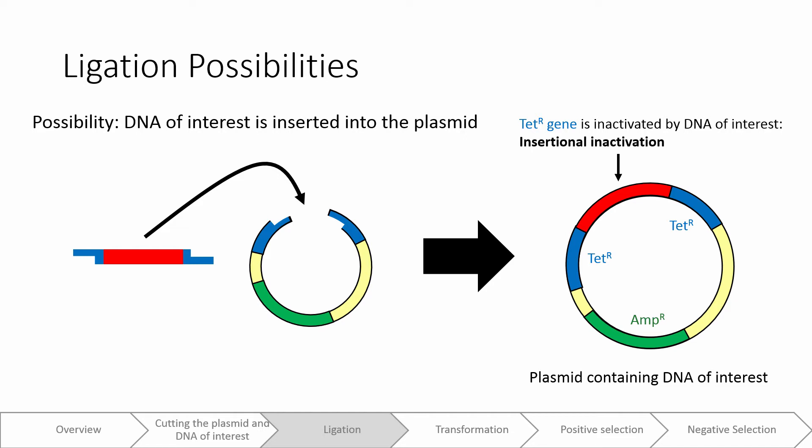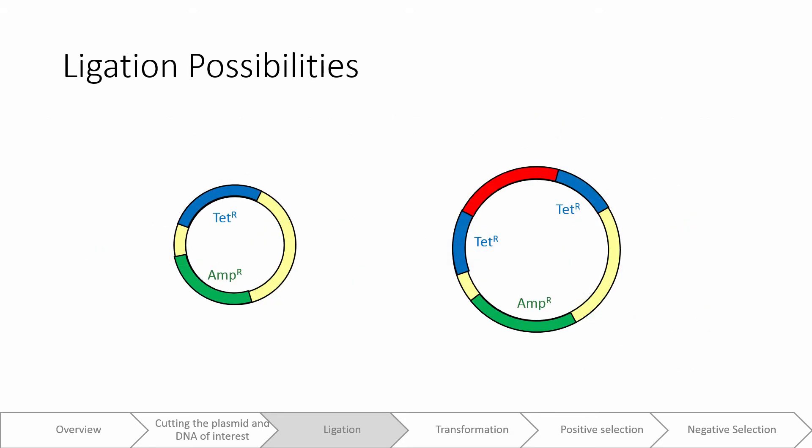This is an example of insertional inactivation, the inactivation of a gene caused by the insertion of DNA within its coding sequence. This insertional inactivation will be very important for negative selection. While there are other possible things that could happen, for simplicity's sake, these will be the possibilities that we will be discussing. The end result of this process is that you will have some plasmids that do not contain your DNA of interest, and some that do.